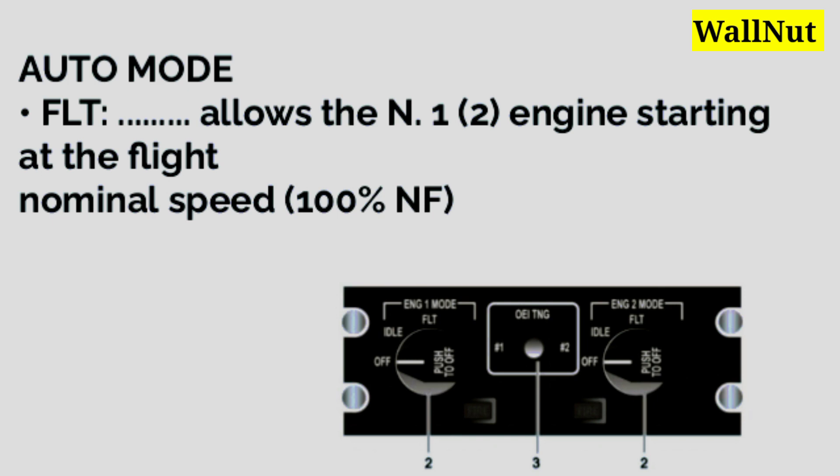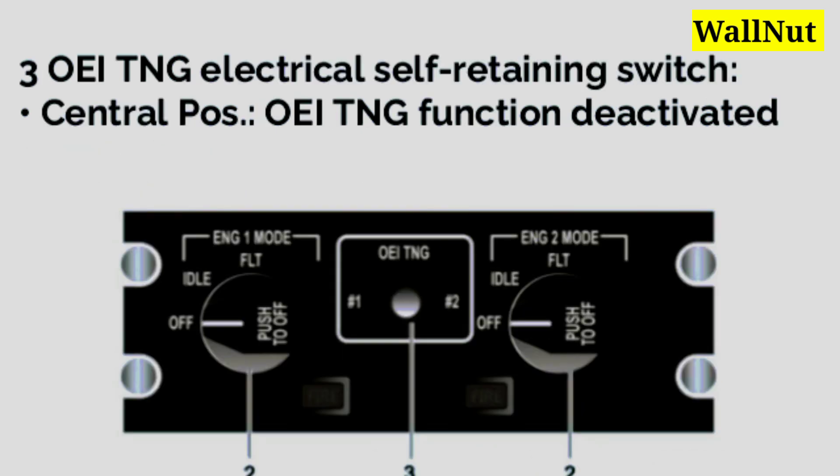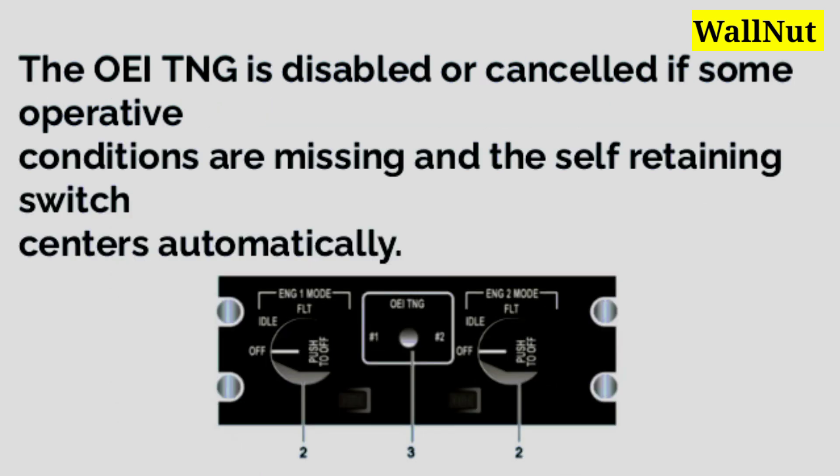This is the picture of the engine control panel. The OEI training switch is an electrical self-retaining switch; at the central position, the OEI function is deactivated. In the figure, position 3 is OEI training. The OEI TNG is displayed as cancelled if some operative conditions are missing, and the self-retaining switch centers automatically.